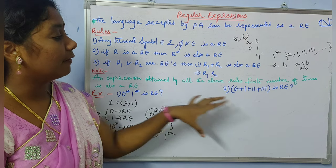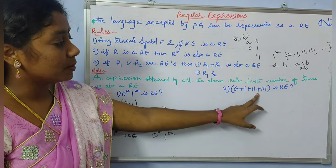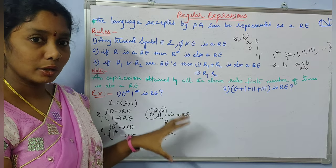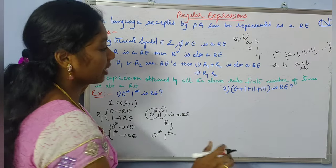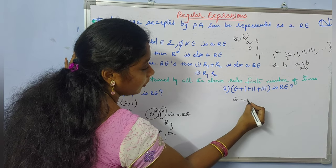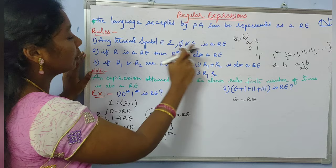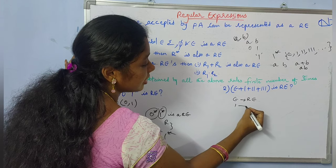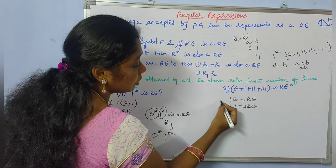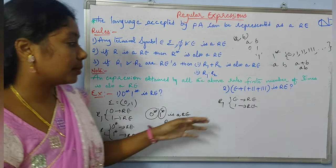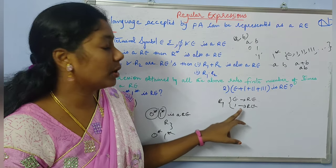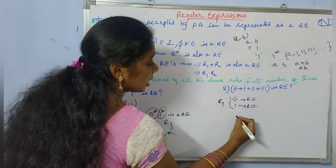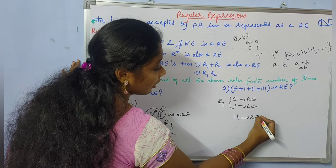Consider the second example: epsilon + 1 + 11 + 111. We need to check whether this is a regular expression or not. From rule 1, epsilon is a regular expression — because in rule 1 we stated that epsilon is a regular expression. And also from rule 1, 1 is a regular expression because 1 belongs to sigma. So these two — epsilon and 1 — are regular expressions from rule 1. And I can also say that 11 is also a regular expression.